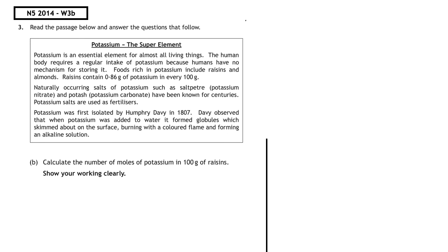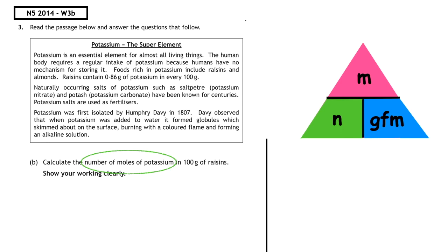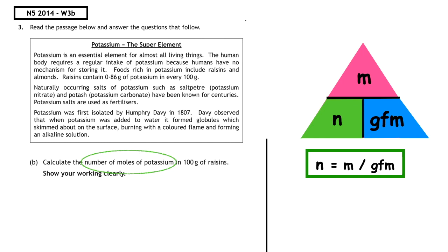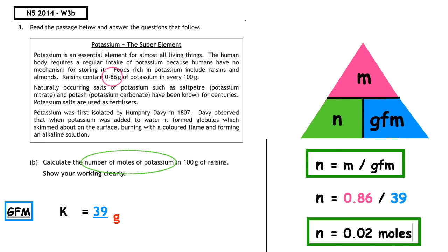This last past paper question is from the National 5 2014 written paper (Q3b), a close reading question where you must read the text and answer questions that follow. Calculate the number of moles of potassium in 100 grams of raisins. The formula is n = m ÷ GFM. From the passage, the mass of potassium given is 0.86 grams. The GFM of potassium from the data booklet is 39 grams. Therefore: n = 0.86 ÷ 39 = 0.02 moles.